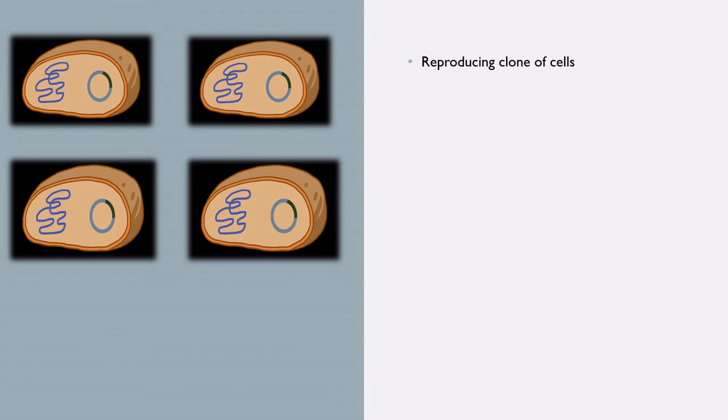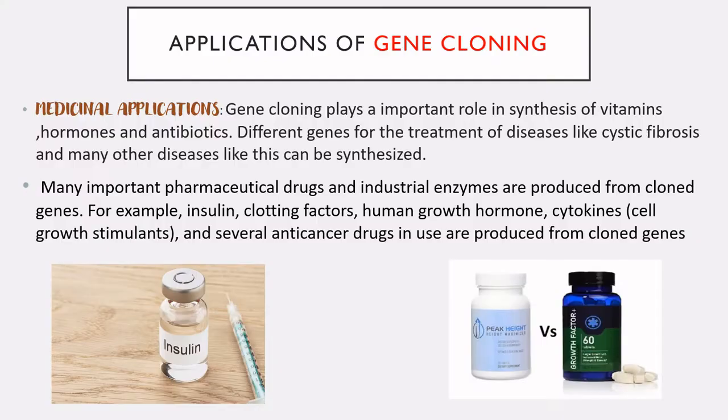When the bacterial cell divides, all daughter cells receive the recombinant plasmid, which again replicates in each daughter cell. After successful rounds of cell division, visible colonies will form. Here we can see the bacterial cells reproducing as a clone of cells.